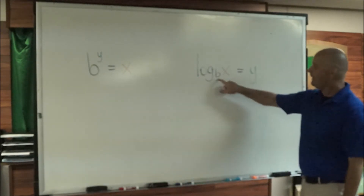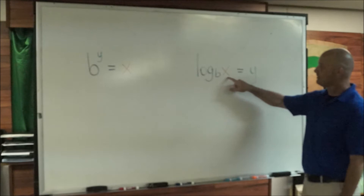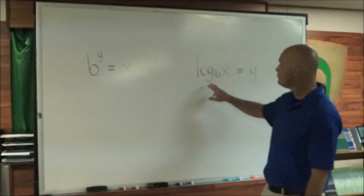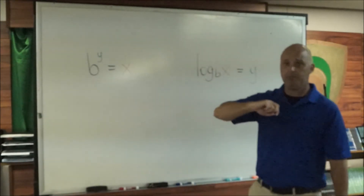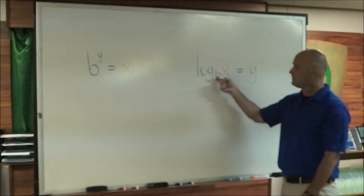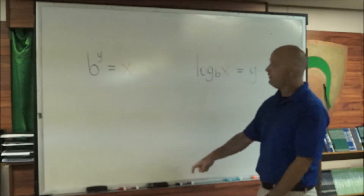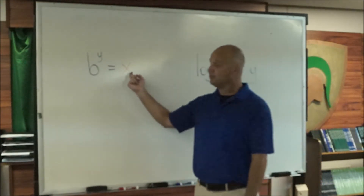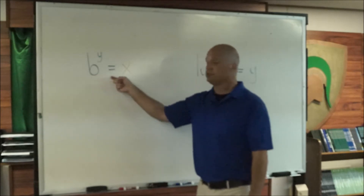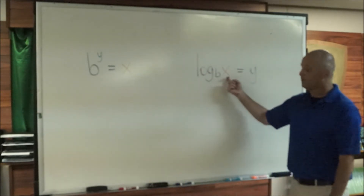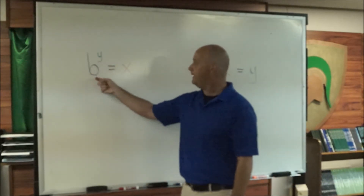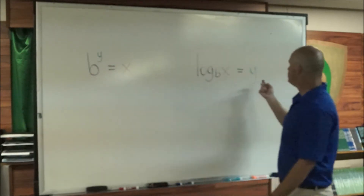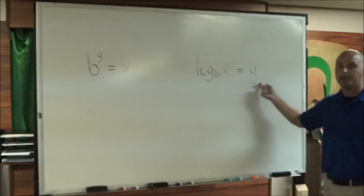This is called log base b of x equals y. We're going to take the base of the power and put it as the base of the log. Then we take the solution to the exponential form and that goes right next to the base. The exponent that was attached to the base comes over here, and that's what the log is going to be equal to.